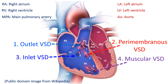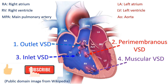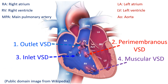Perimembranous VSD is in the upper part of the interventricular septum where it is thin and membrane-like. Muscular VSD is a defect in the thick muscular part of the interventricular septum. Inlet VSD is near the atrioventricular valves, which form the inlet of the ventricles. It is often associated with other endocardial cushion defects, like a cleft in the anterior mitral leaflet producing mitral regurgitation and ostium primum atrial septal defect.